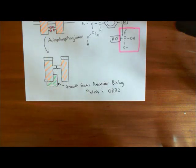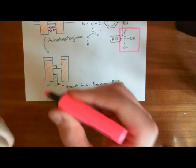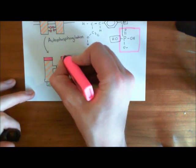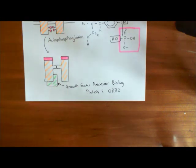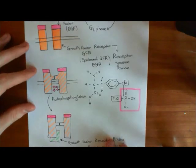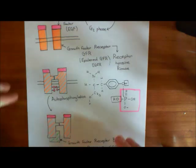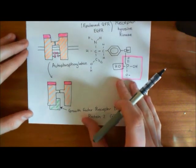Welcome back to this next video on the growth factor receptor and the MAPK ERK pathway. So far, the growth factor — keeping it general, but you could think of epidermal growth factor — has bound to the growth factor receptor, such as the epidermal growth factor receptor. That causes the receptor to change conformation, dimerize with a partner activated receptor, and then phosphorylate each other's tyrosine residues in a process known as autophosphorylation.